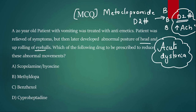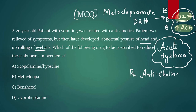When we give metoclopramide and acute dystonia occurs, the treatment is clear: dopamine is blocked and acetylcholine is elevated, so we need to reduce acetylcholine. We use anticholinergics, and the commonly used drug is benzhexol, also known as trihexyphenidyl. Another drug that can be used is promethazine.